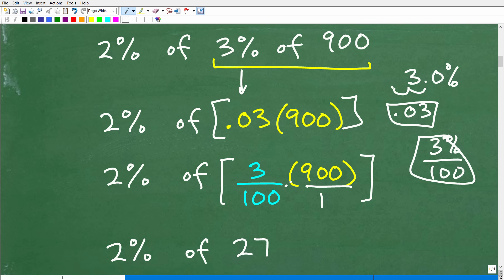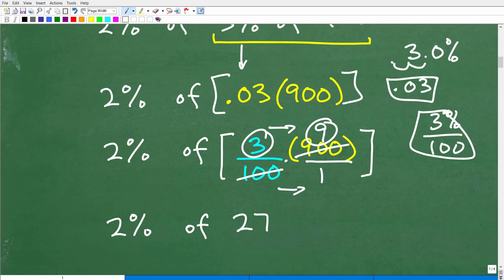So now we're going to take that three over 100 and multiply by 900. So how do you multiply fractions? Well, you multiply the numerators and the denominators. And so this is super easy because I'd be like, oh well, 100 goes into 900 nine times. Three times nine is of course 27, or you can go three times 900, 2700 divided by 100. Either way you're going to end up with the answer of 27.